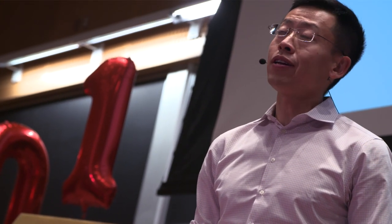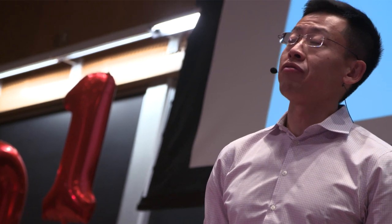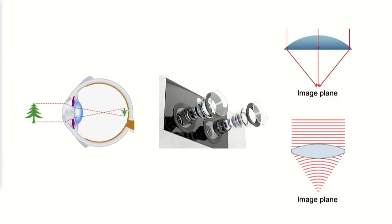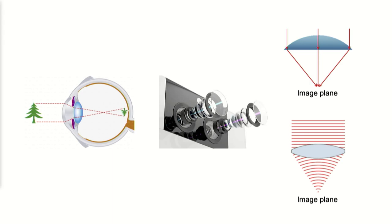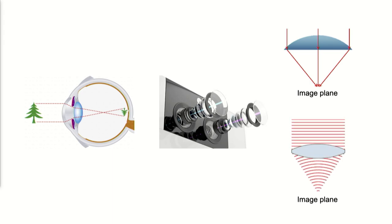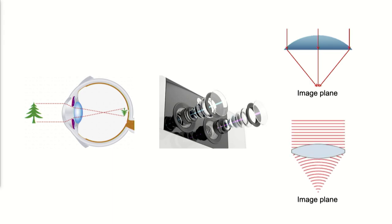No matter if this is a vision system in a human body or in a machine, such as a camera module, there is always one very important component in every optical system, which is a lens or a series of lenses that form an image onto a sensor.